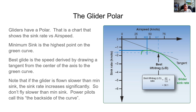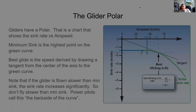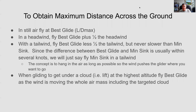If the glider is flown slower than min sink, the sink rate increases significantly — so don't fly slower than min sink. Power pilots refer to this as the backside of the curve. To obtain maximum distance across the ground in still air, fly at best glide, L/D max.